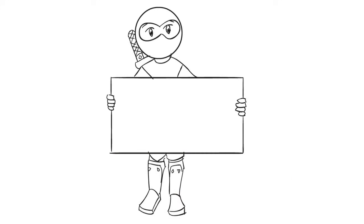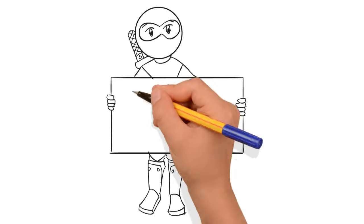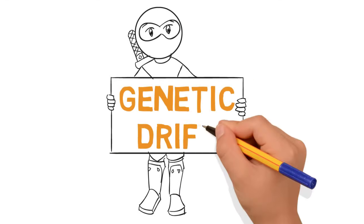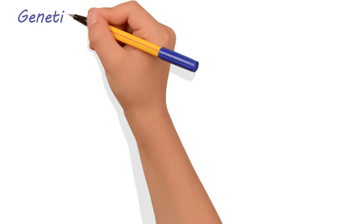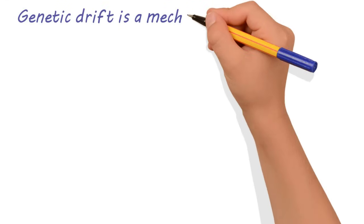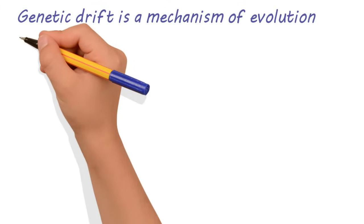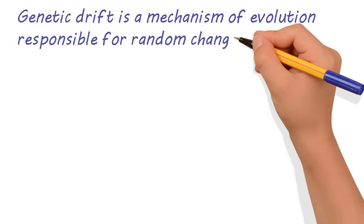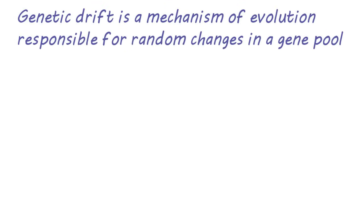Thanks for stopping by. Today we're going to talk about genetic drift. Genetic drift is a mechanism of evolution that's responsible for random changes in a gene pool.